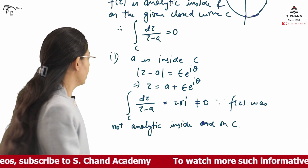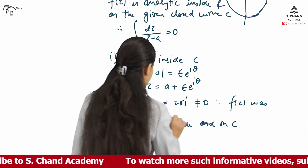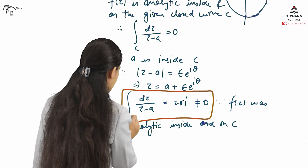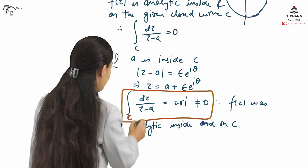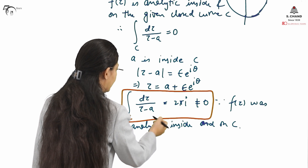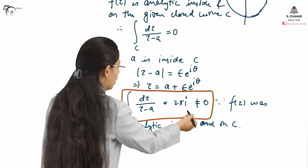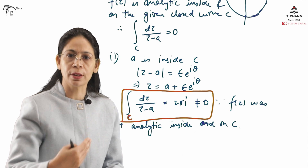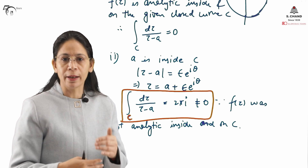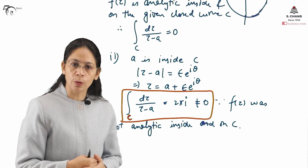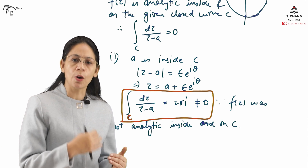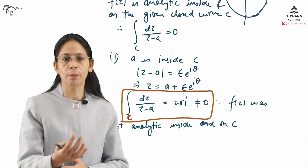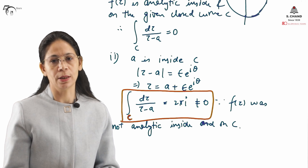An important clarification: if the value of a contour integral comes out to be zero, it is not necessarily true that the function was analytic. However, if the function is analytic inside and on the closed curve C, then the Cauchy-Goursat theorem guarantees that the value of the integration will necessarily be zero.